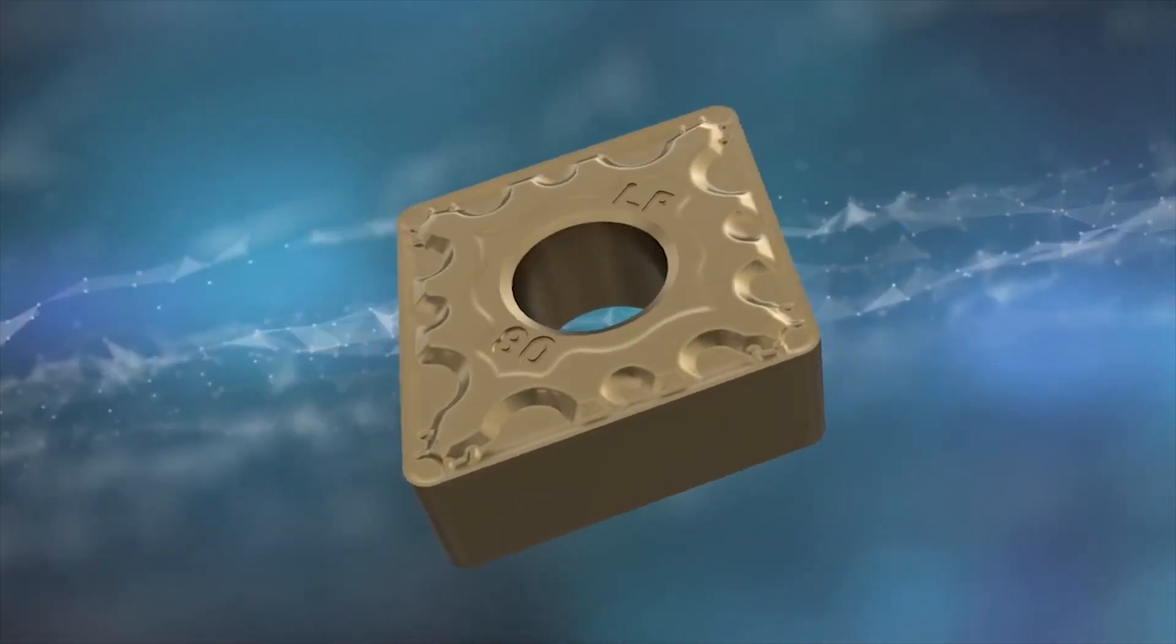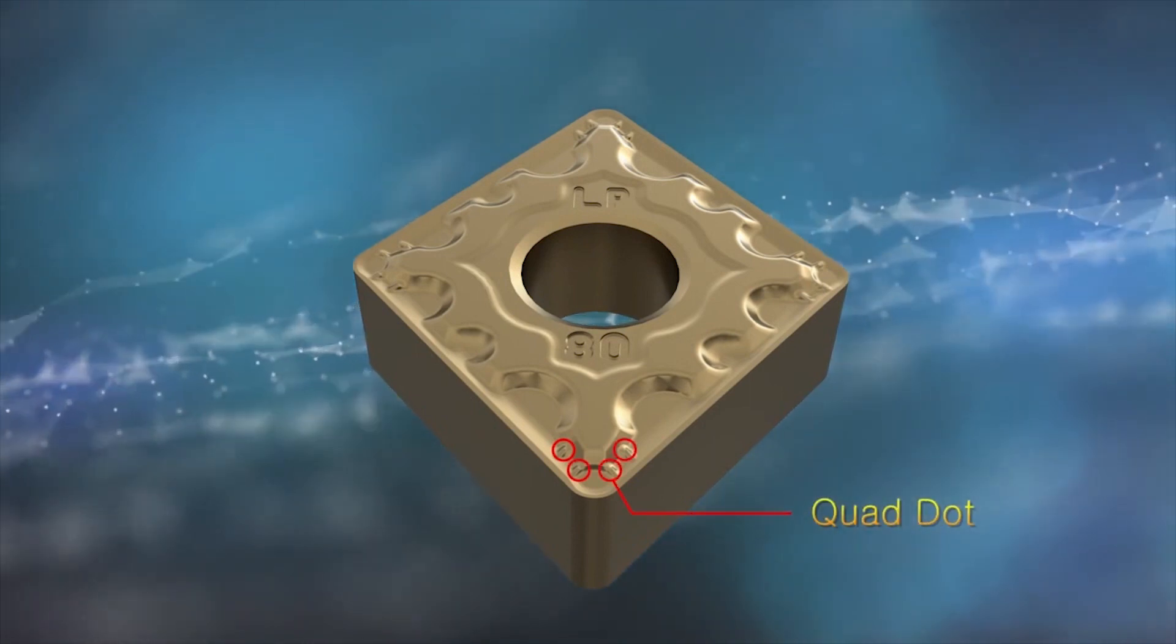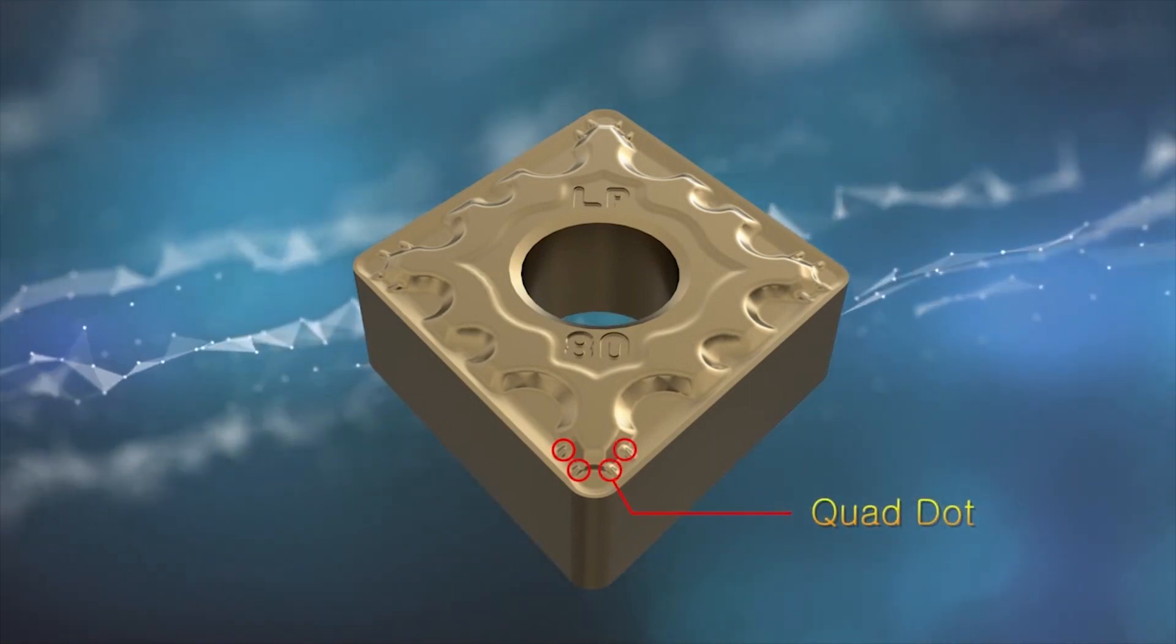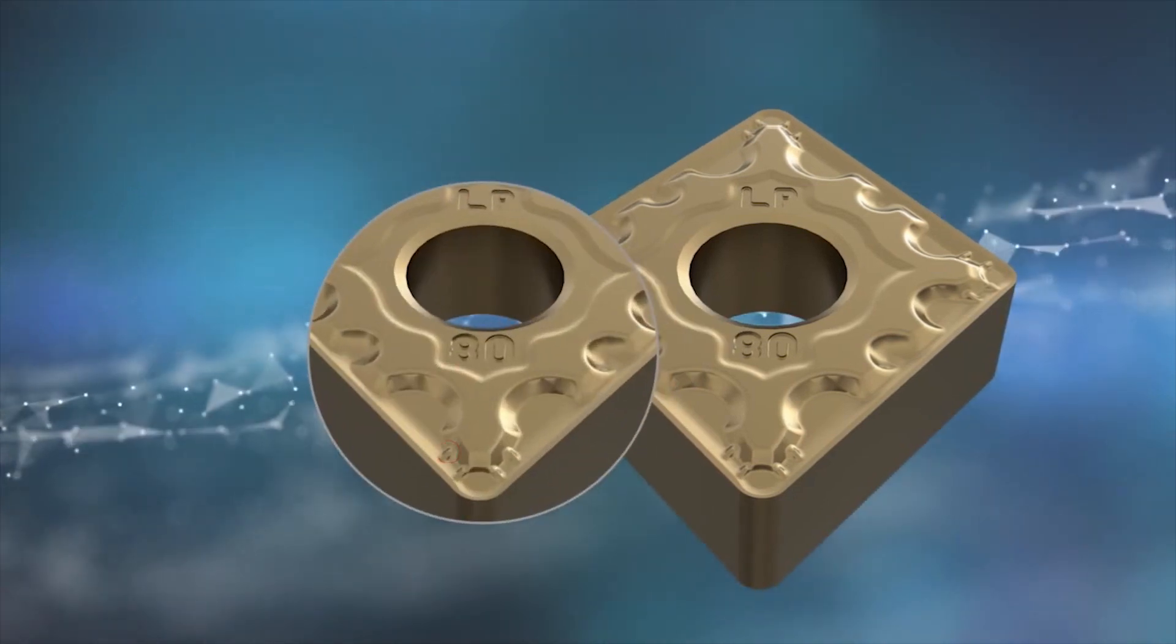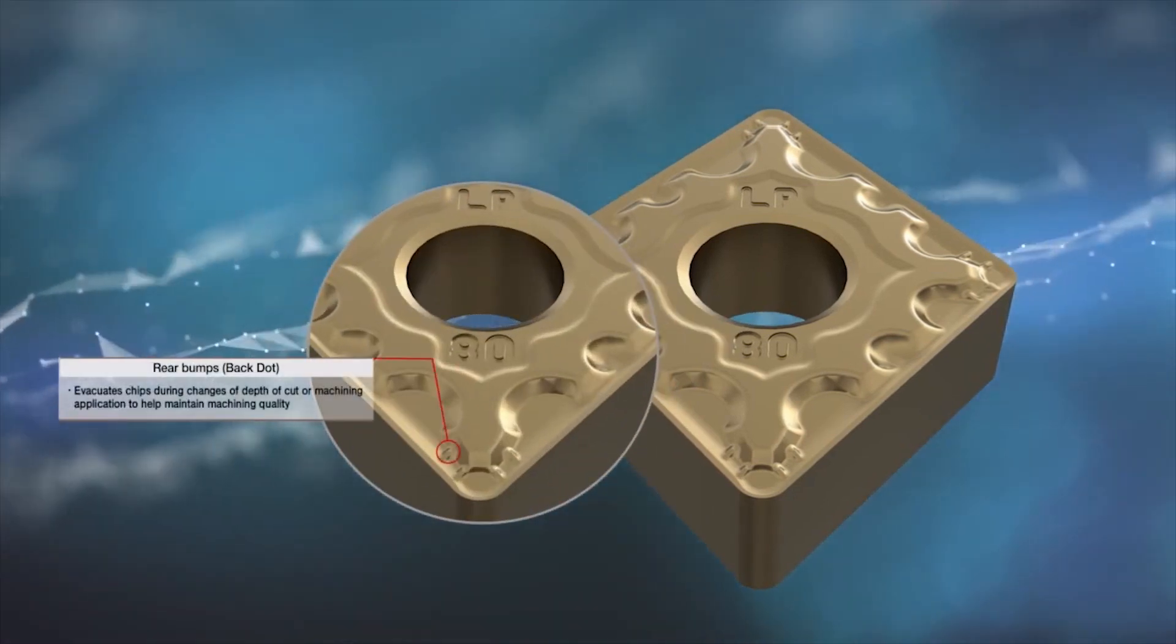Still guaranteeing the continual breaking of chips and continuous improvements, the bumps on the chip breaker help evacuate chips while sustaining the quality of machining, even during changes in slotting or milling conditions.